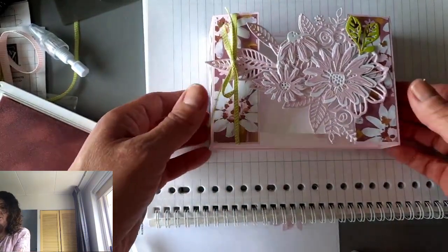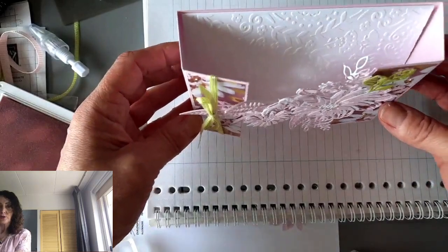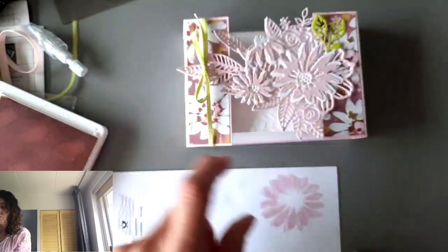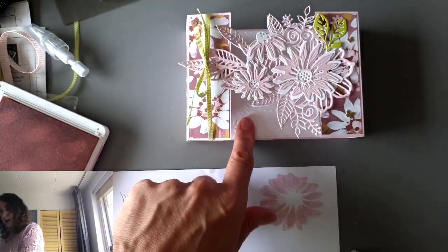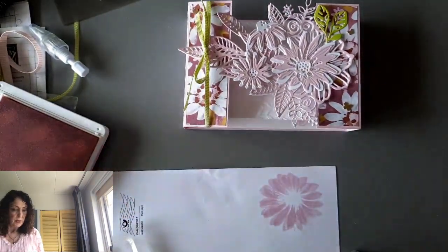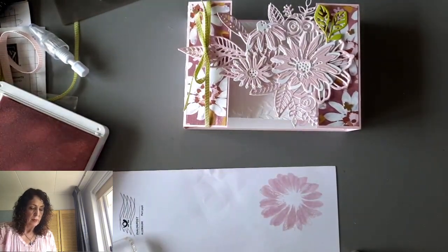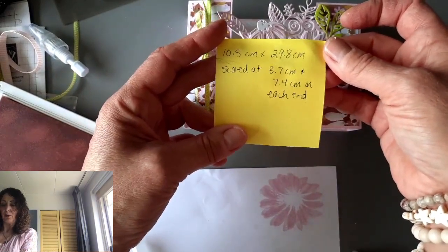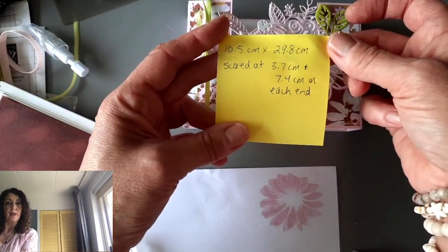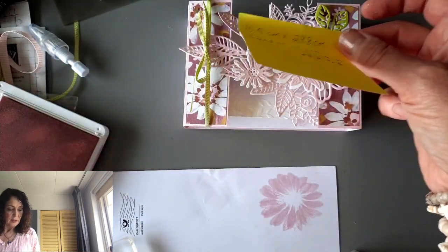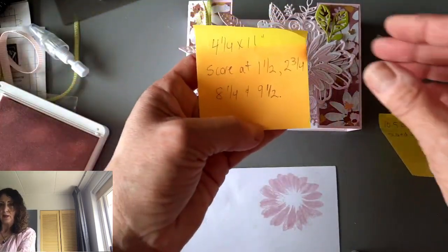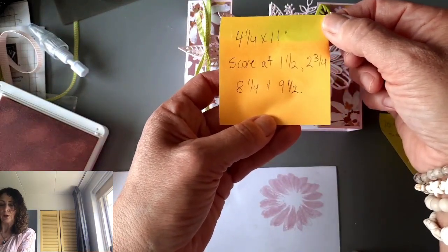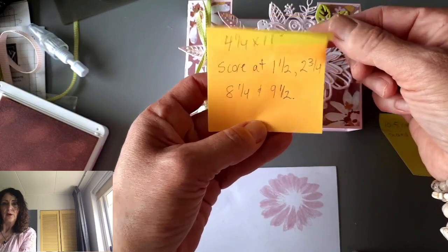Thank you so much to Beverly Morales for this fantastic card idea. It's a lovely fold that she called a box card. Let's have a look and see again what those measurements were. 10.5 centimeters by 29.8, scored at 3.7 and 7.4 from each end. And here it is in inches again. 4.25 by 11, score at 1.5, 2.75, 8.25, and 9.5.